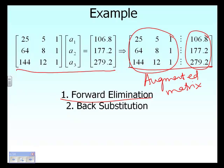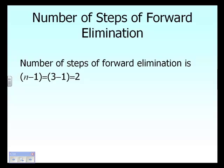There are two steps in Naive Gauss Elimination: the forward elimination step, and the back substitution step. How many steps of forward elimination do we have to conduct? It's basically n minus 1, where n is the number of equations, or the number of rows and columns in the coefficient matrix. In this case, we have three equations, so we subtract one and get two steps of forward elimination.